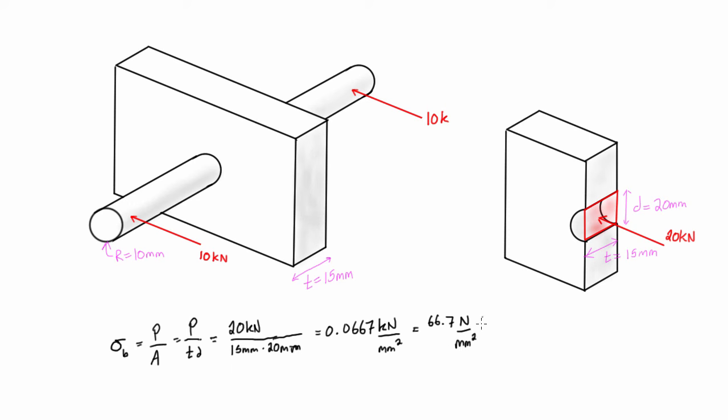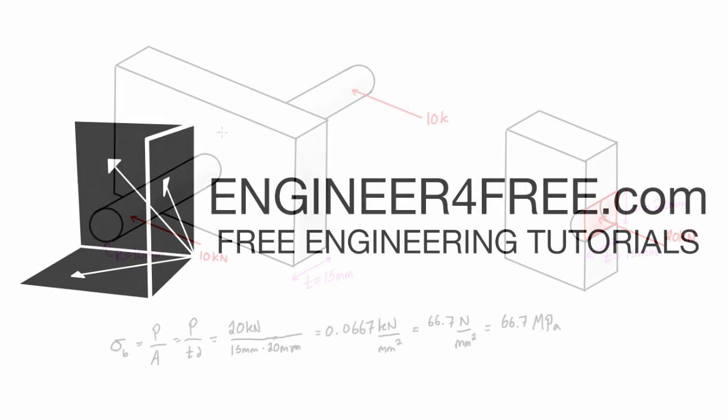And if you remember from previous videos, newtons per millimeter squared is the same units as megapascals. So we have 66.7 megapascals of a bearing stress that this rod is exerting onto this block.